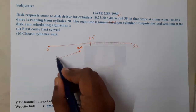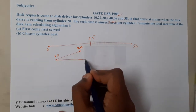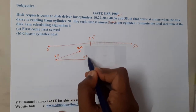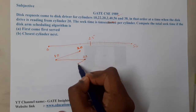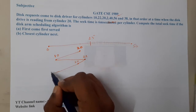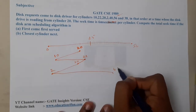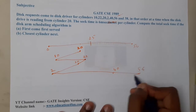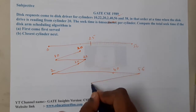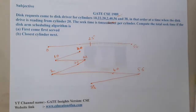So from 20 we go to 10, then back to 22, then to 20, then back to 2, then to 40, then to 56, then back to 38. That is the whole traversal path for FCFS.